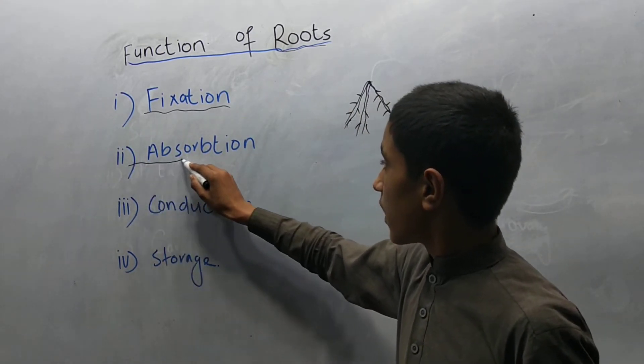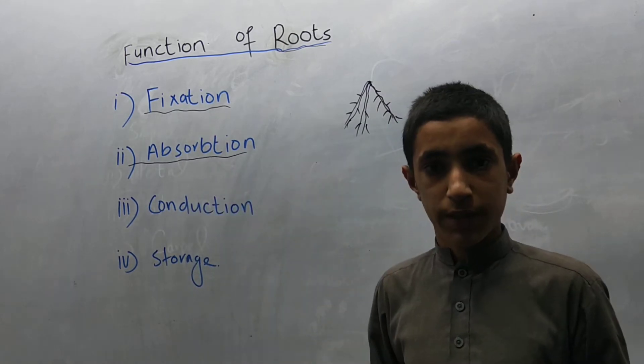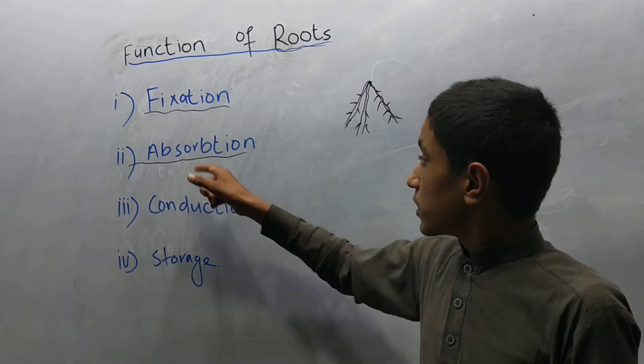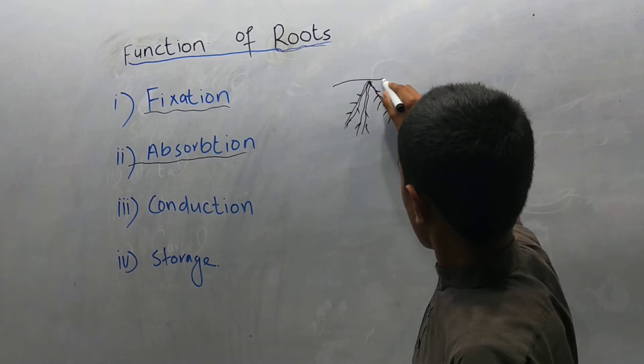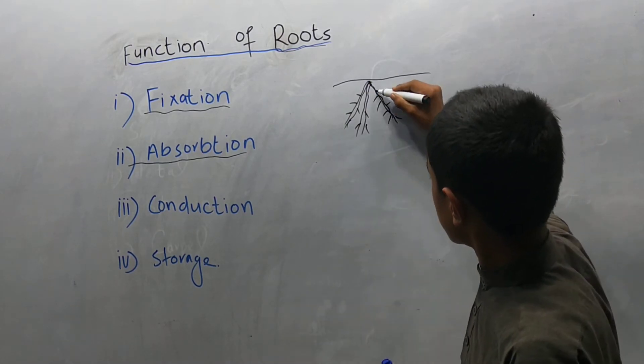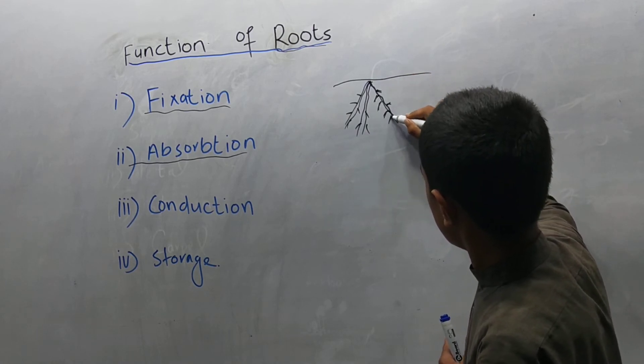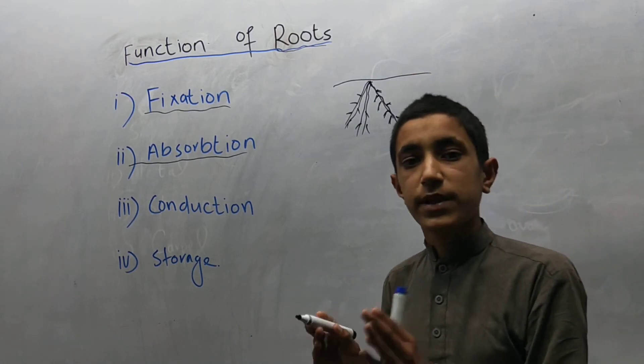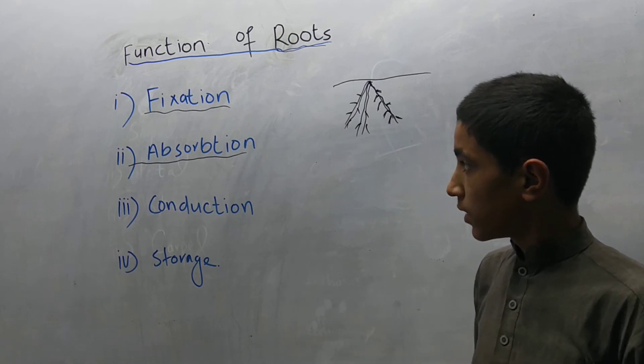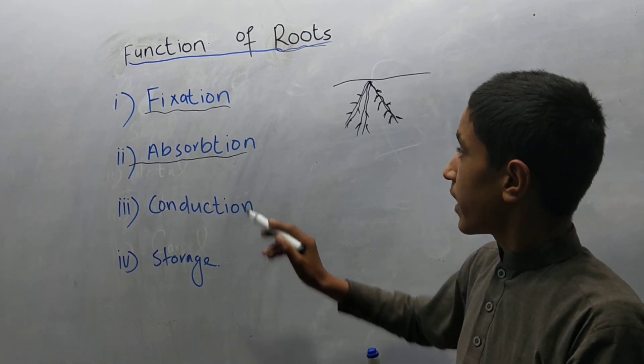The second function of the root is absorption. Every root has small hairs. This is the root and these are the small hairs. These hairs absorb water and minerals. This is the second function of the root.